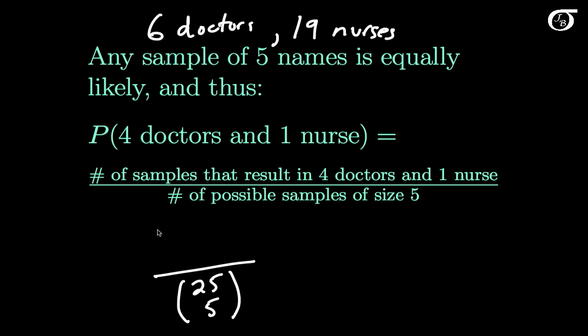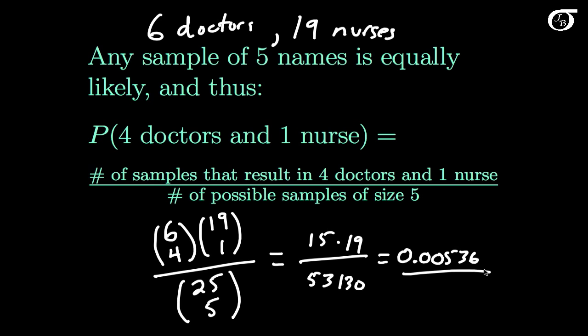Now on the numerator we need the number of ways of getting 4 doctors and 1 nurse. Well there are 6 doctors and from those 6 doctors we must pick 4 of them. And there are 19 nurses and from those 19 nurses we must pick 1. And so just 6 choose 4 times 19 choose 1 over 25 choose 5. And if we use the combinations formula appropriately here, we'll see that this is equal to 15 times 19 over 53,130. Punch that into your calculator and see that this is 0.00536 rounded to 5 decimal places.